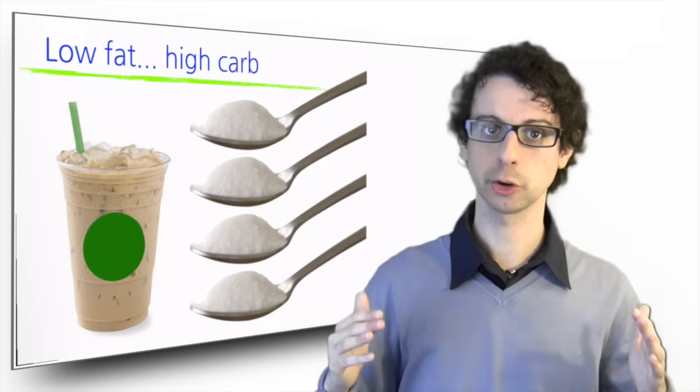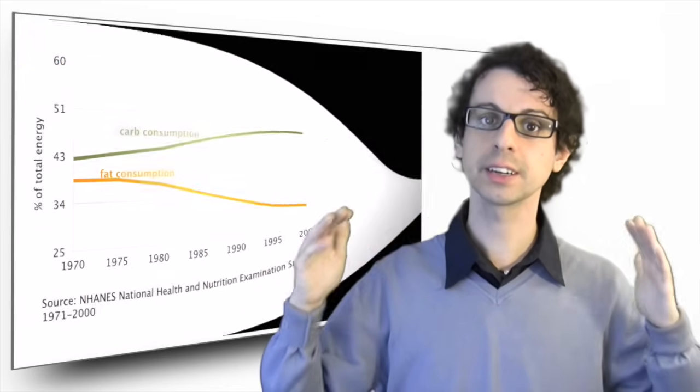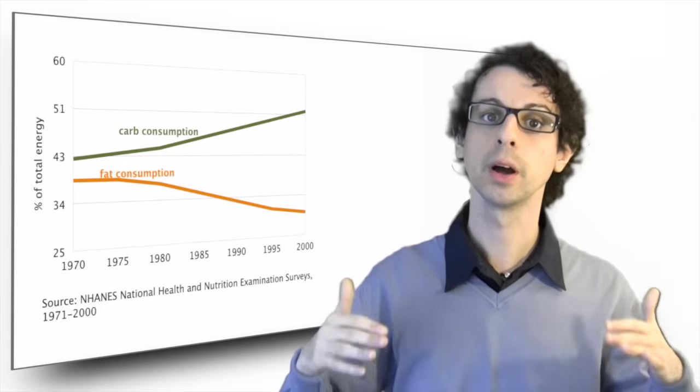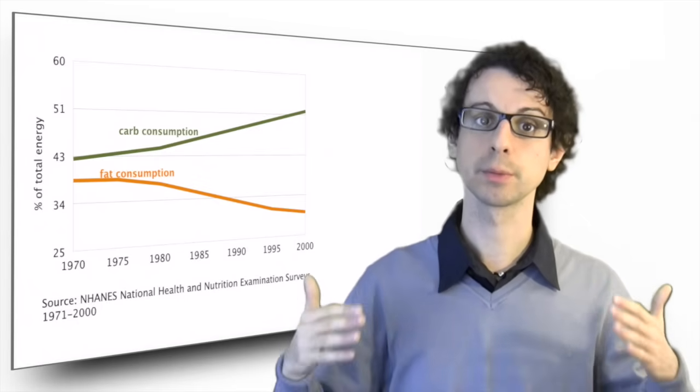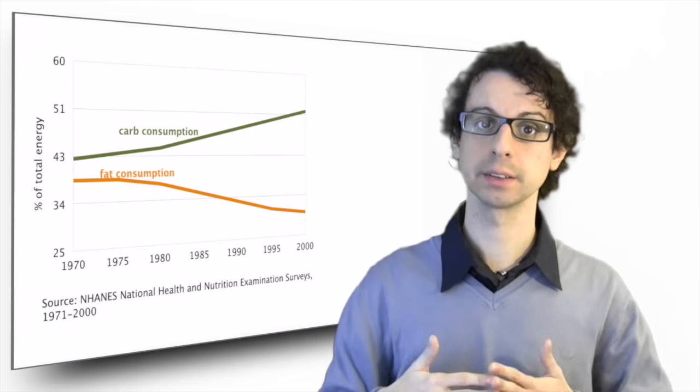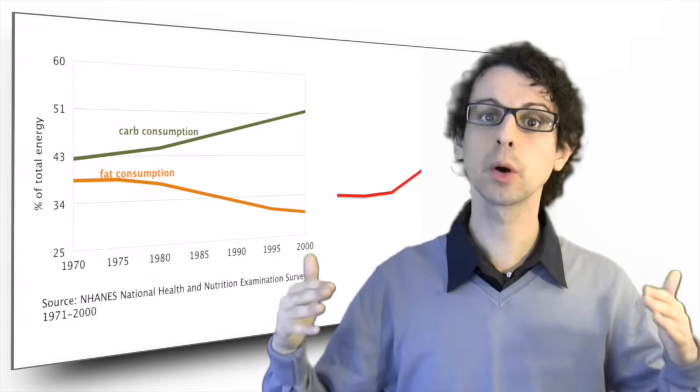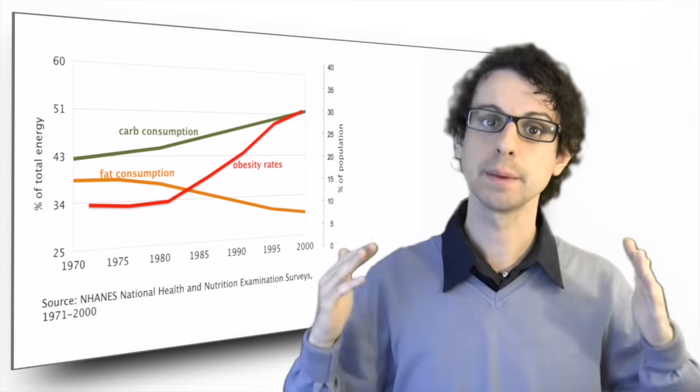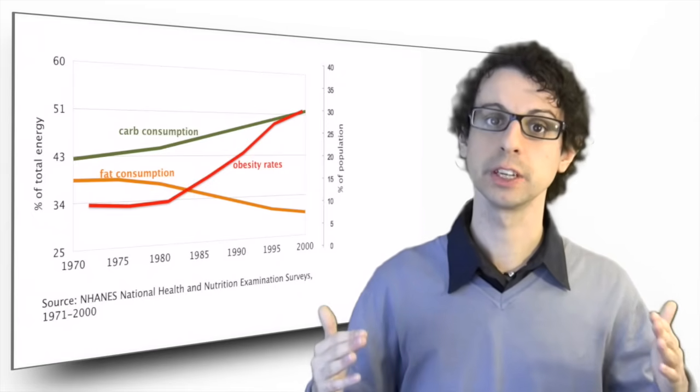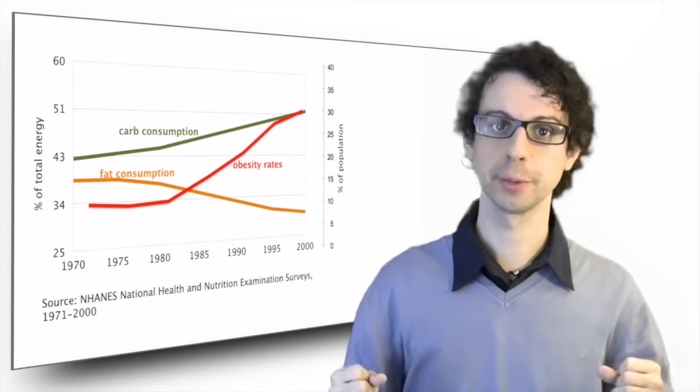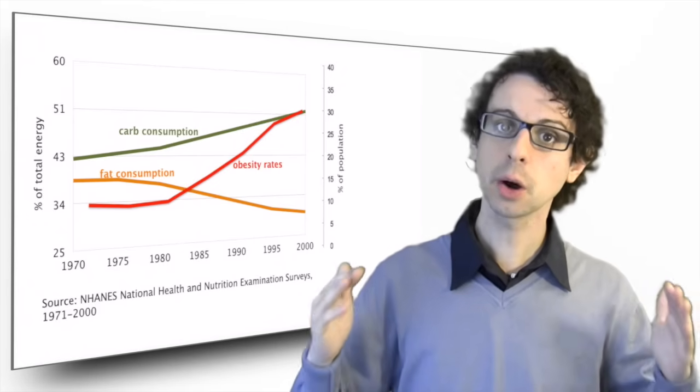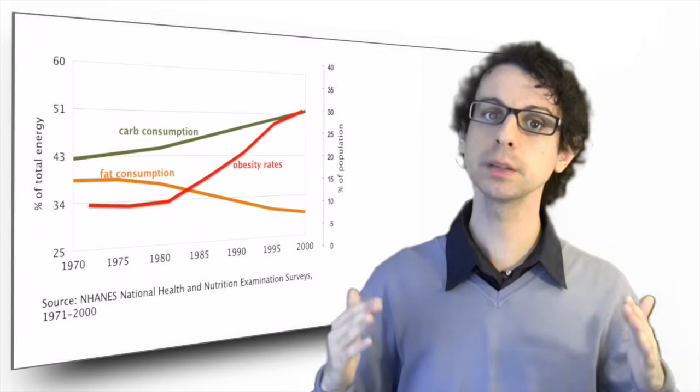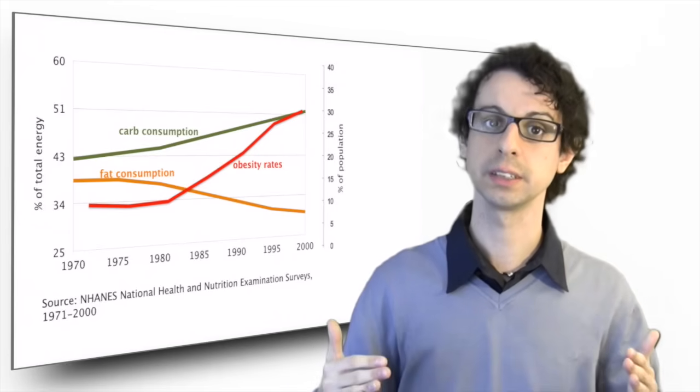To cut the story short, the US population started getting less and less of its energy from fats, but more and more of it from carbs coming from added sugar and refined grains. It also became more and more obese, so clearly this didn't help. The US diet became low-fat, but the US population became fatter than ever. It is to be noted that the total amount of calories also increased over time, and this is the most important contributor of the obesity epidemic.